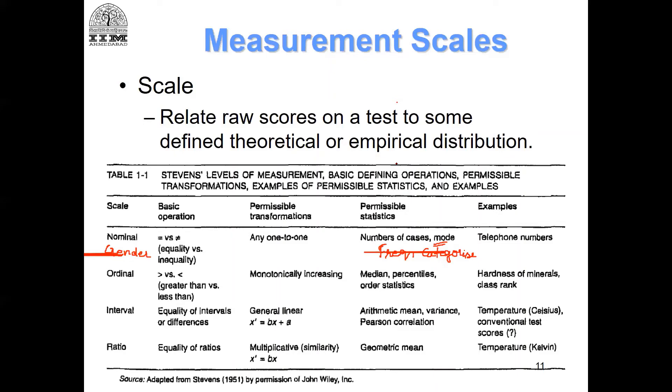The other kind of numbers you can assign in your scale is an ordinal scale, and the best example is the Likert scale. A Likert scale has one, two, three, four, and five. You can also have seven points, six points, and so on.